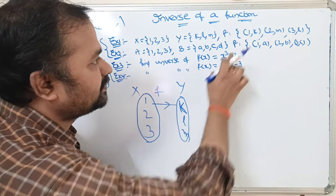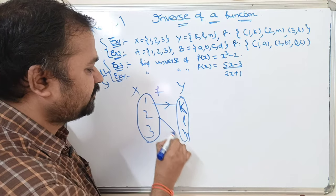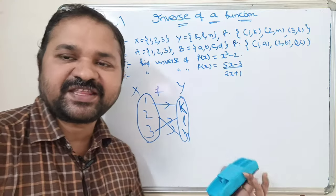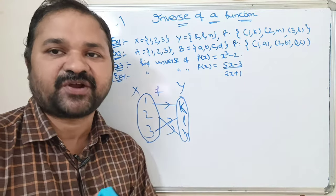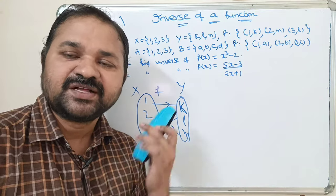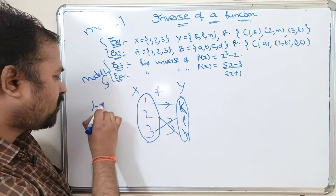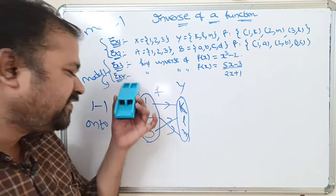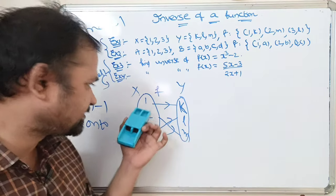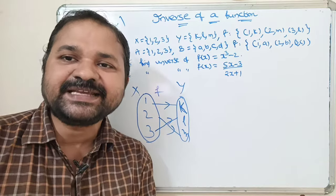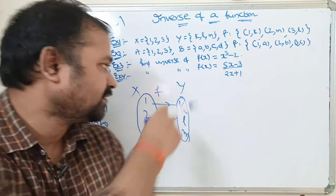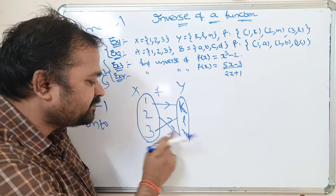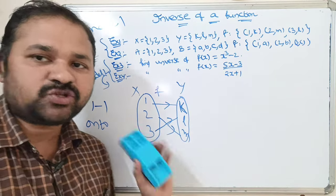The mappings are: 1 to k, 2 to m, and 3 to l. Let us check whether it is a bijective function. It should be one-to-one as well as onto. Every distinct element of set X should have a distinct image in Y. Here 1 maps to k, 2 maps to m, 3 maps to l, so this is a one-to-one function.